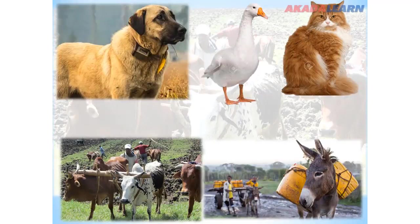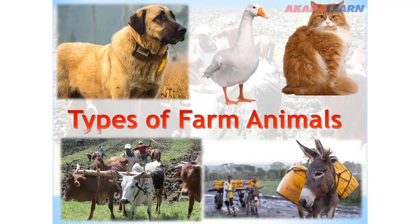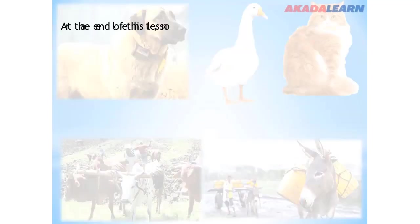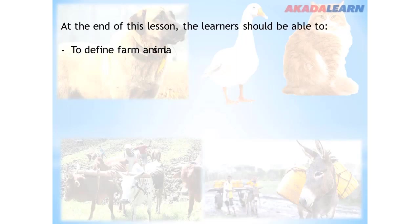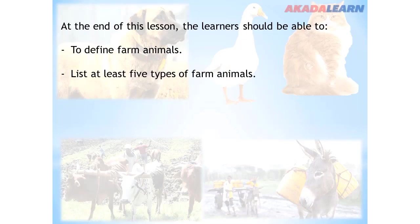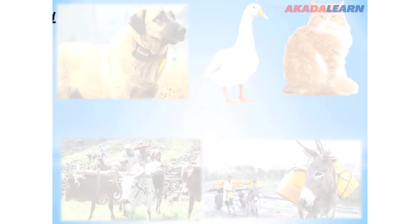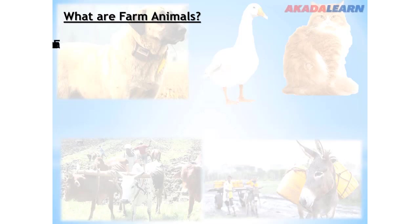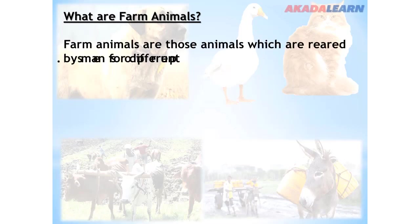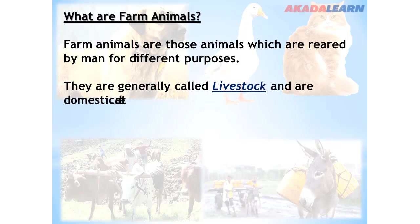Welcome to today's lesson on types of farm animals. By the end of this lesson, learners should be able to define farm animals, list and explain at least five types of farm animals, and explain at least six uses of farm animals. Farm animals are those animals which are reared by man for different purposes. They are generally called livestock and they are domesticated animals.